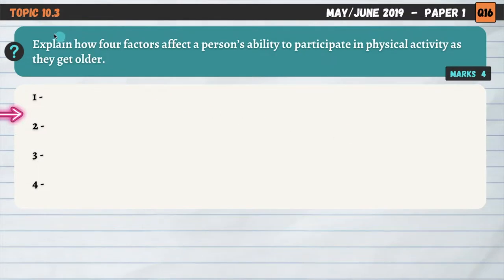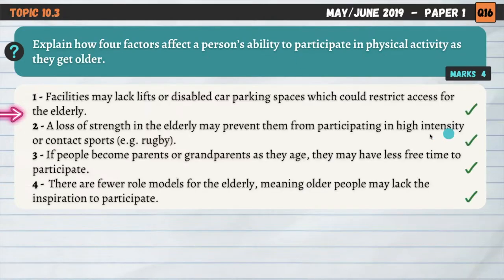Topic 10.3 for question number two: explain how four factors affect a person's ability to participate in physical activity as they get older. So four things that are going to affect your ability to participate in sport or physical activity as you age. Facilities may lack lifts or disabled car parking spaces, which could restrict access for the elderly.